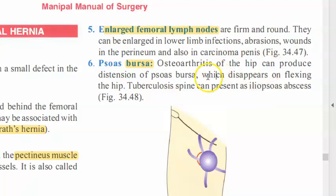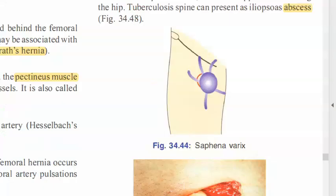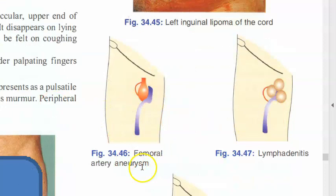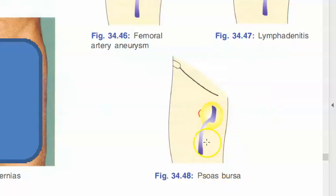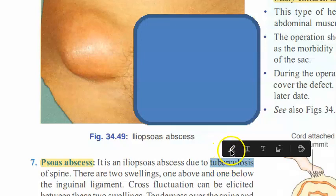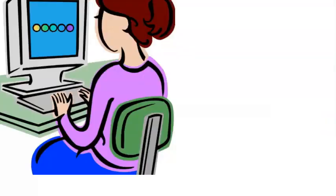Additionally, tuberculosis of the spine can present as a psoas abscess in this region. So a swelling here could be a saphenovarix, lipoma, aneurysm, lymph node enlargement, psoas bursa, or psoas abscess — do not immediately diagnose every such swelling as femoral hernia.